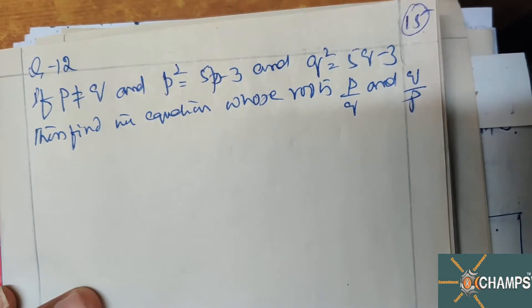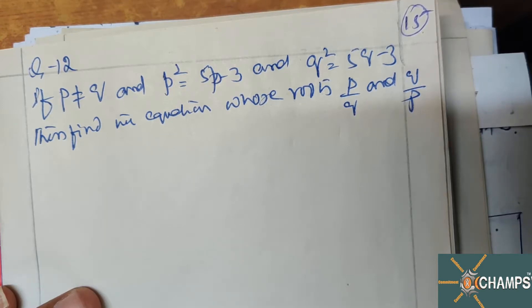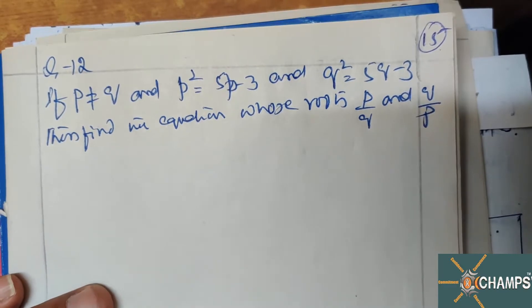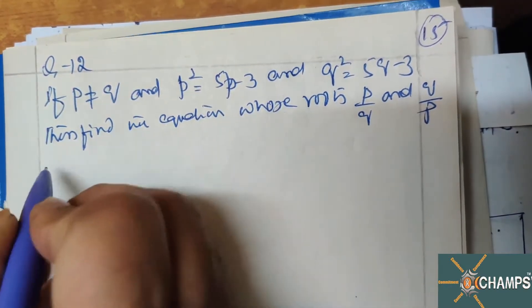What is given in the question? p and q are not equal — they are different values. One relation given is p² = 5p - 3, and another relation given is q² = 5q - 3.